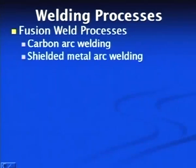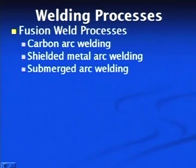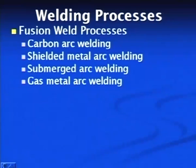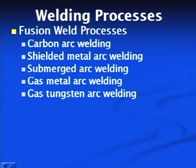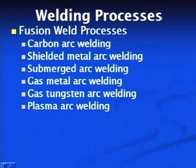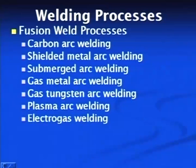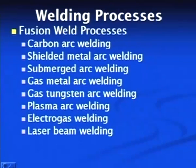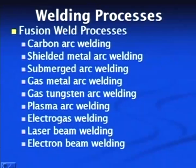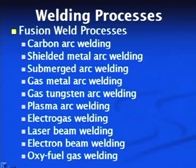Fusion welding processes are those in which the faying surfaces are brought to the molten state and then allowed to solidify. These include carbon arc welding, shielded metal arc welding, submerged arc welding, gas metal arc welding, gas tungsten arc welding, plasma arc welding, electro gas welding, gas welding, laser beam welding, electron beam welding, and oxy-fuel gas welding.